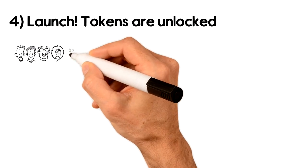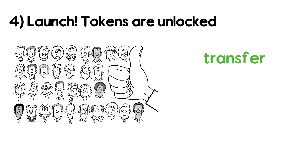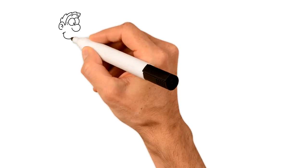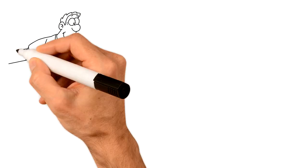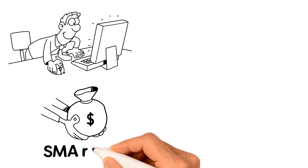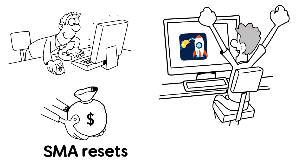4. Tokens are unlocked. Finally, tokens are unlocked and made available to investors to transfer, trade, or lock in the liquidity program. Only one tranche of tokens can be unlocked at a time. As soon as one price target is met, the SMA resets and the fueling period for the next unlock begins. And the four-step process starts again.